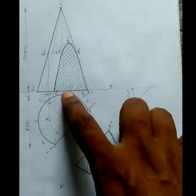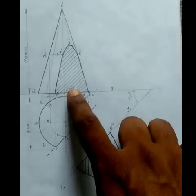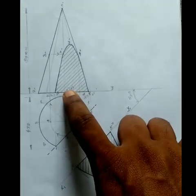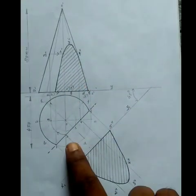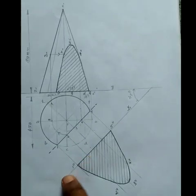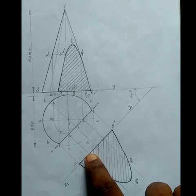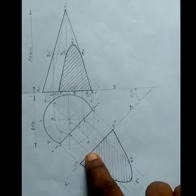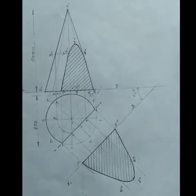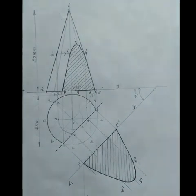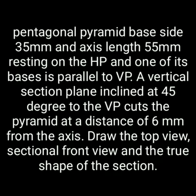Looking at the x1y1 line, for each point, project from xy to get to the point. Take the shoulder distance to place it on the x1y1 line, then measure the distance from the line using double-dash notation for each corresponding point.